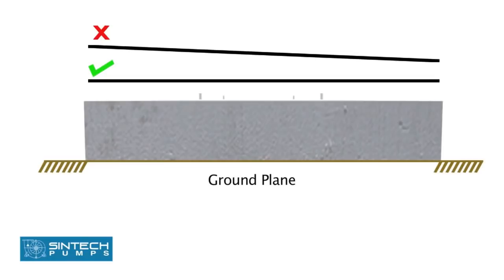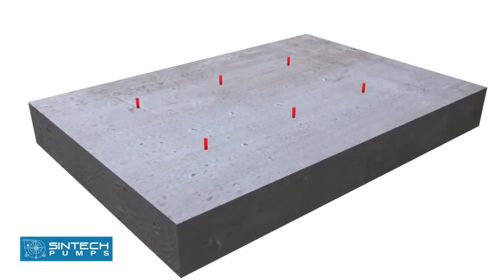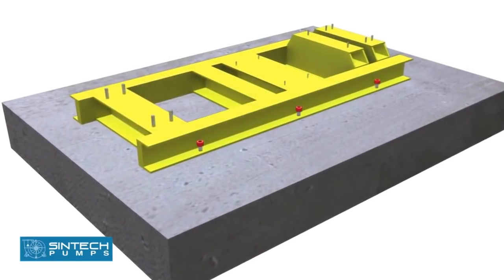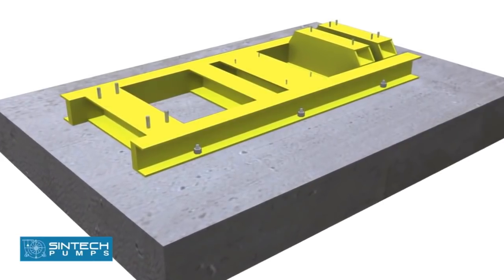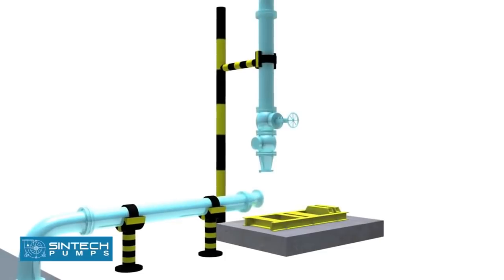The foundation bolt of proper size should be embedded in the concrete and baseplate tightened, ensuring that it is level in all directions. Piping associated with the pump must be anchored and supported independently of the pump and should never put any strain on the pump casing.